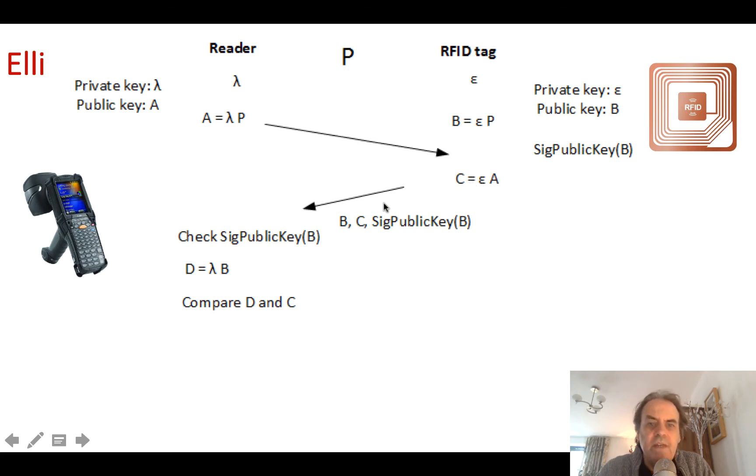So it sends back B, which is its public key epsilon P, C which is epsilon A, and it also sends back the signature of B.